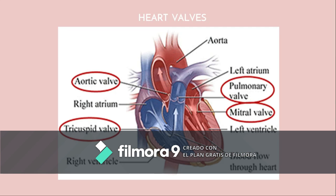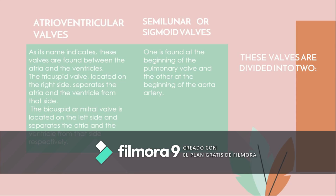The aortic valve is located in the human heart between the left ventricle and the aorta, and is one of the two semilunar valves of the heart. The pulmonary valve is a semilunar valve that lies between the right ventricle and the pulmonary artery and has three cusps. The bicuspid aortic valve is an aortic valve that only has two leaflets instead of three. The tricuspid valve is one of the two main valves on the right side of the heart. These valves are divided into two atrioventricular valves and two semilunar valves.